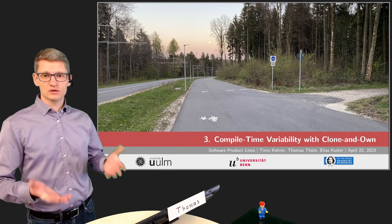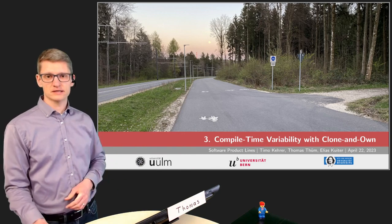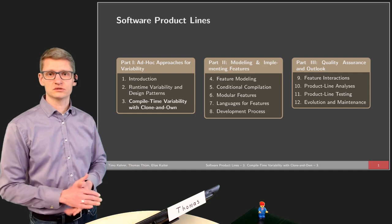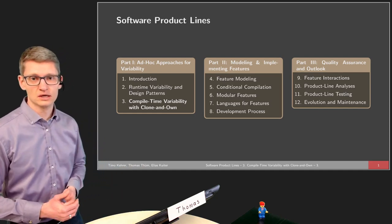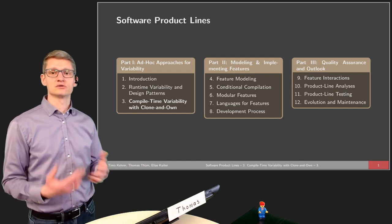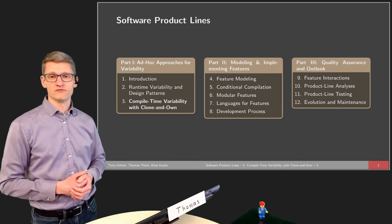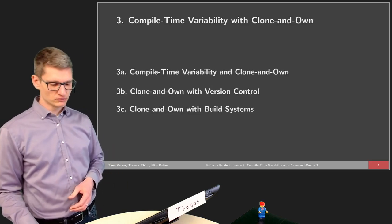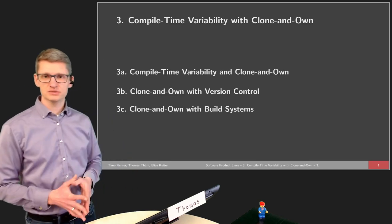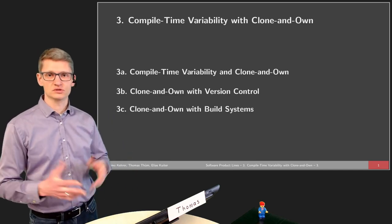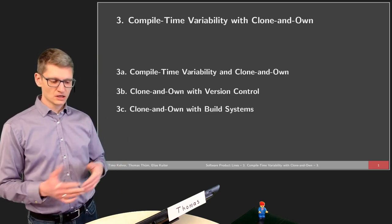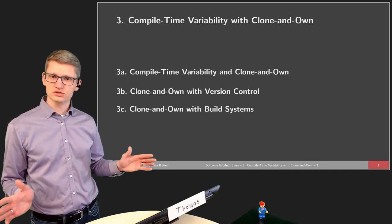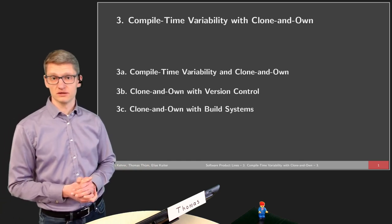In this lecture we will talk about compile time variability. This lecture is part of a larger lecture series. In the last two lectures we had an introduction to product lines, and in the last lecture we talked about runtime variability and how design patterns can be used to implement variable software. In this lecture we will talk about compile time variability in three steps, with separate videos for each part. First we will talk about the concept of compile time variability, which is new for this lecture series.